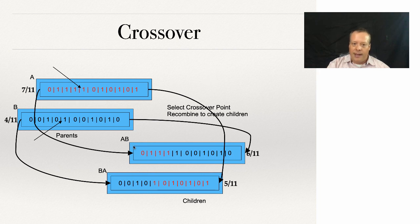Then we create two individuals: AB, which starts with A and ends with B, and BA, which starts with B and ends with A. As you notice, neither of these individuals is as good as A, but neither of these individuals is as bad as B, and that doesn't necessarily happen.